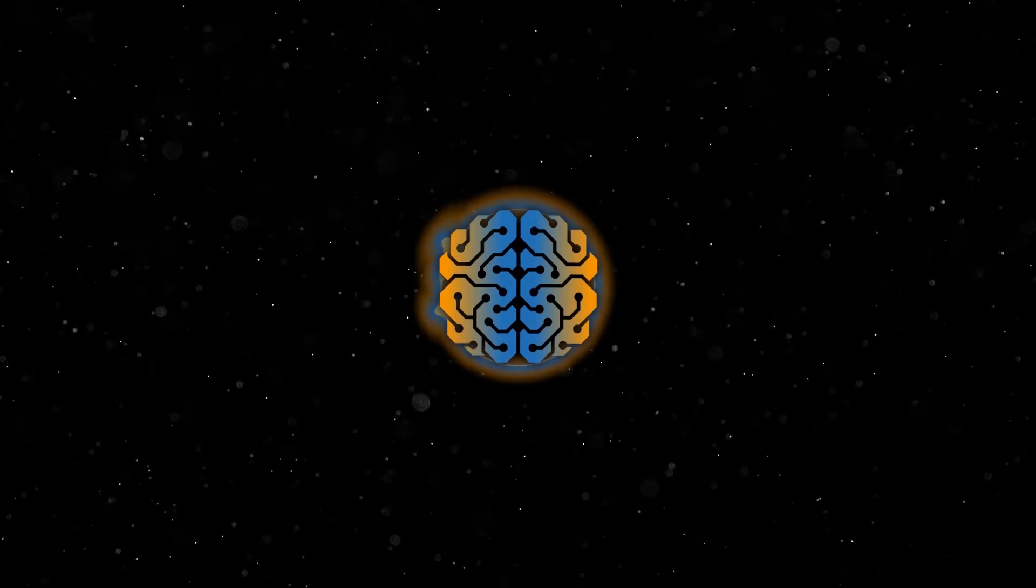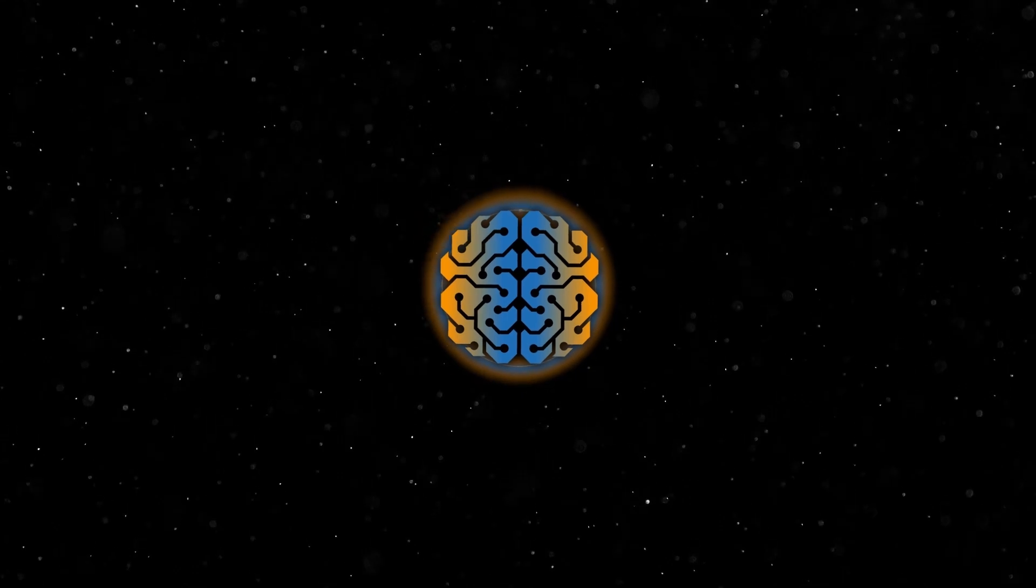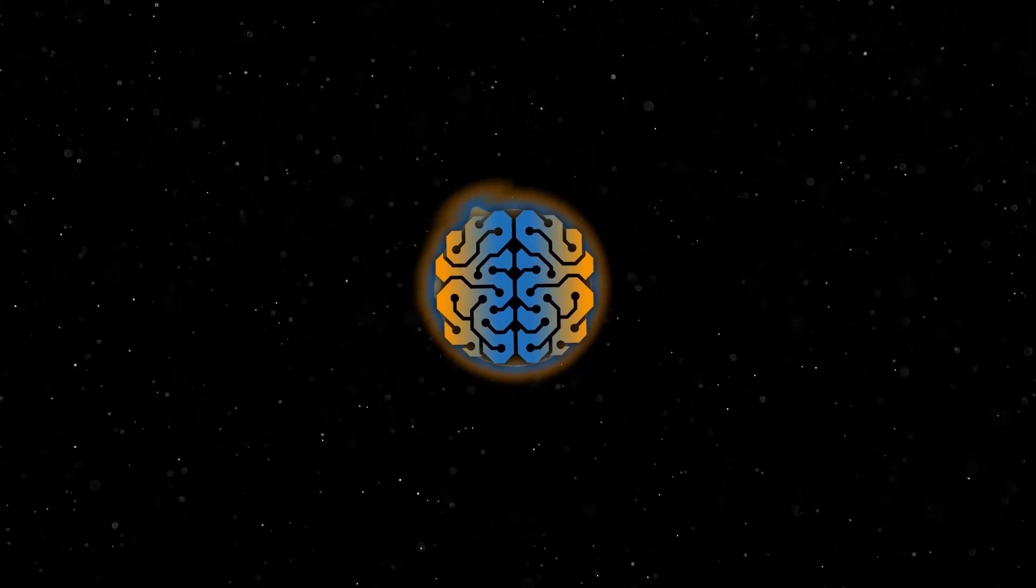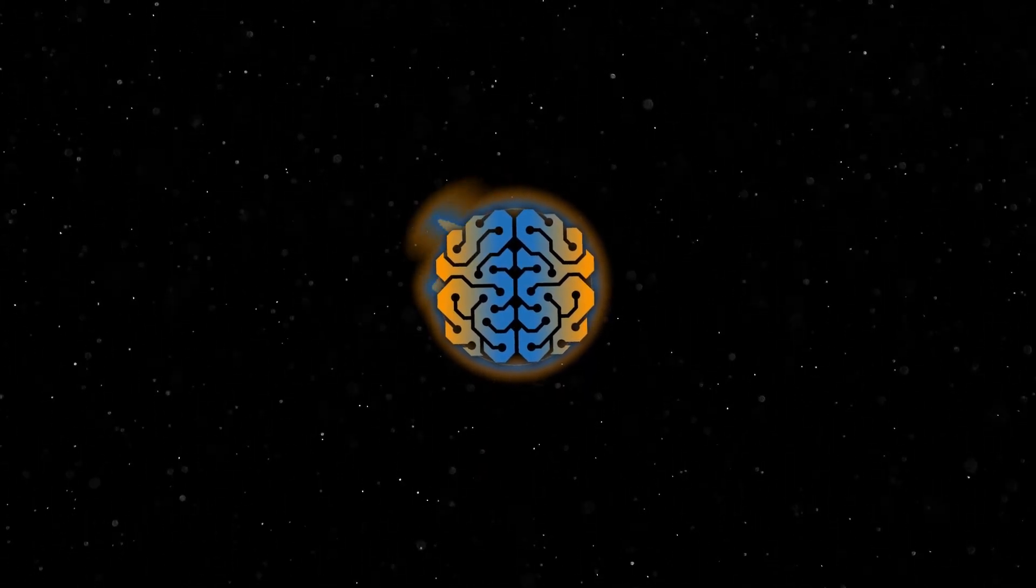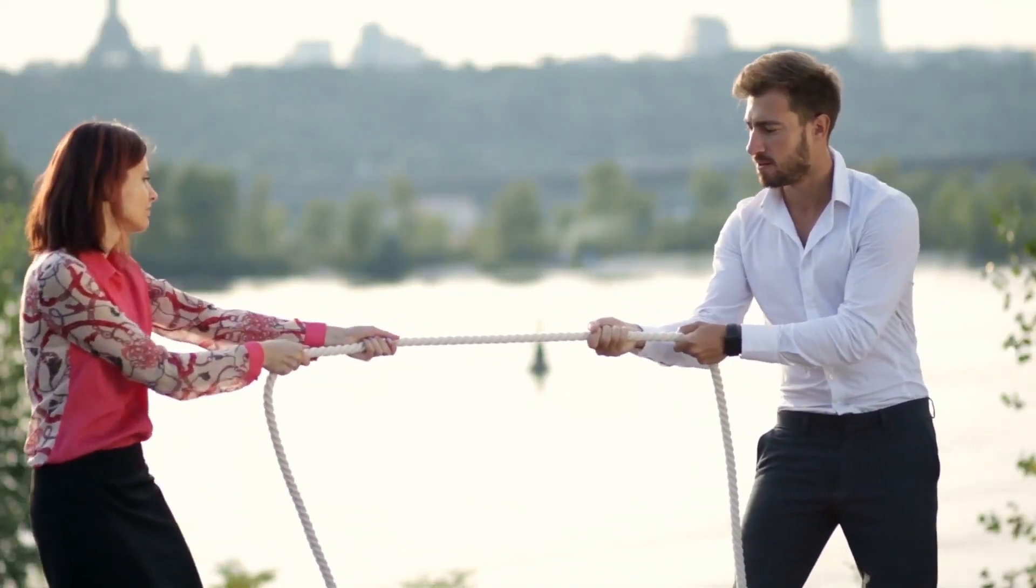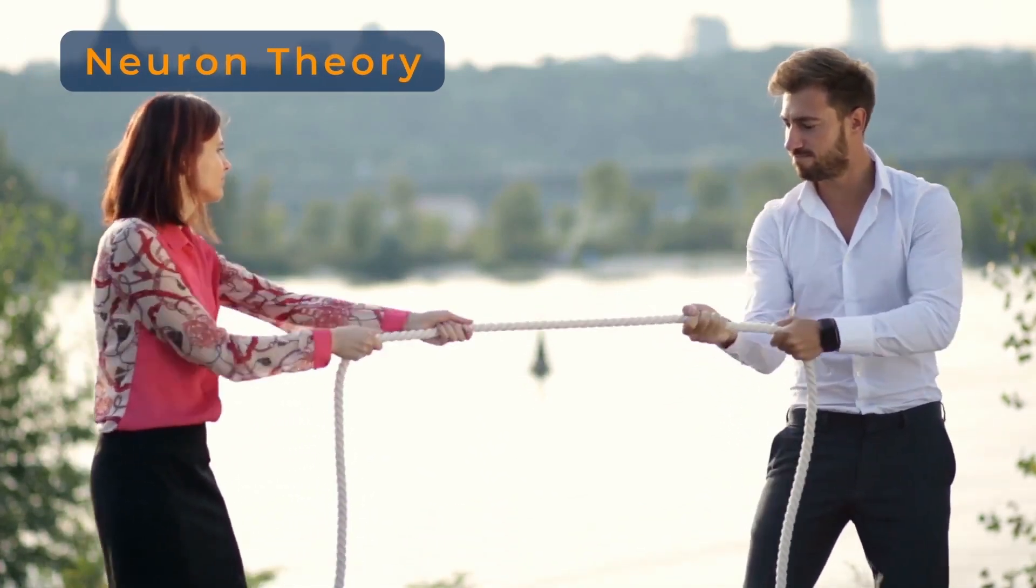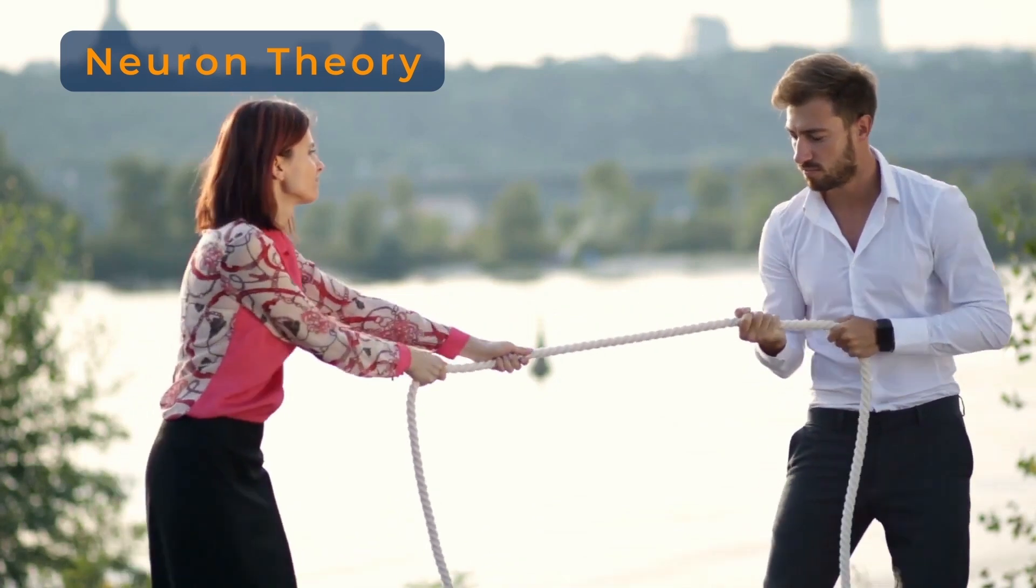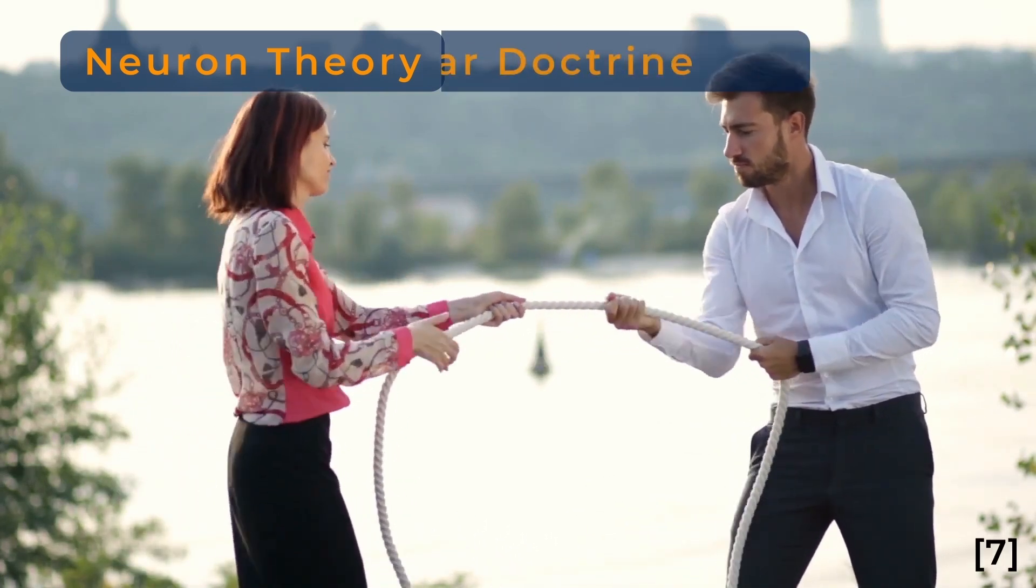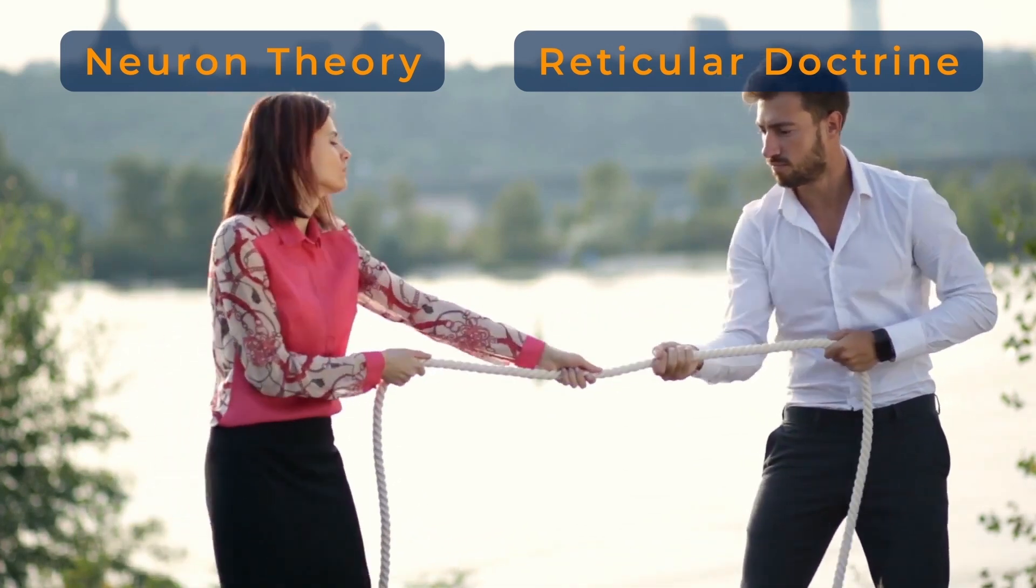However, although many other observations were made during the mid-19th century, technological difficulties did not allow for better investigations, and researchers were locked at a standstill between those who argued that each nerve cell was independent of the others, known as the neuron theory, and the ones who thought all nerve cells were interconnected in a web, the reticular doctrine. And this discussion would last for decades, until around 1873.